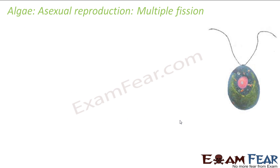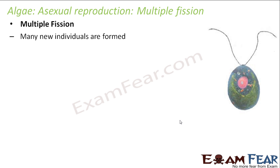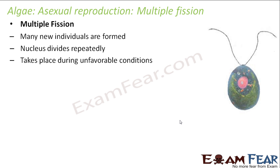Another mode of asexual reproduction in algae is multiple fission. Fission means splitting, so multiple fission means one organism splits into multiple organisms — many new individuals are formed. This happens by division of the nucleus: the nucleus divides repeatedly to form multiple organisms. Multiple fission is most commonly seen in algae like Chlamydomonas and it takes place during unfavorable conditions.